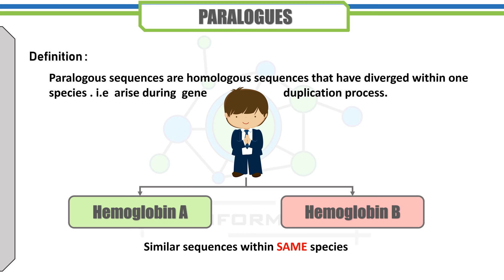Paralogues are genes that have duplicated before or after the speciation event. These sequences have diverged within the same species during the gene duplication process. Paralogues are important in the study of protein evolution. For example, four classes of hemoglobin genes — hemoglobin A, hemoglobin A2, hemoglobin B, and hemoglobin F — are examples of paralogous genes.